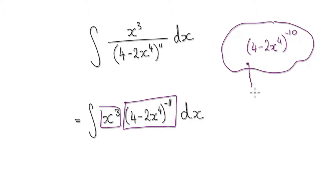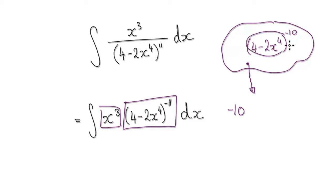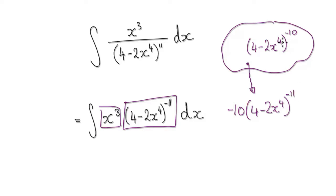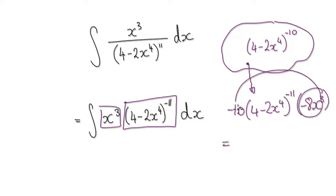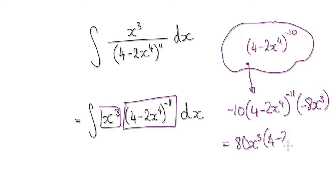So now let's try and differentiate this. When you differentiate this, the negative 10 comes down — negative 10 — the bubble stays the same: 4 minus 2x to the power of 4. The power gets minus 1, so that would be minus 11, and then times the derivative of the bubble itself, which would be minus 8x to the power of 3. Tidy this up — merging these two together gives positive 80x to the power of 3, and then the bubble, 4 minus 2x to the power of 4, to the power of minus 11.